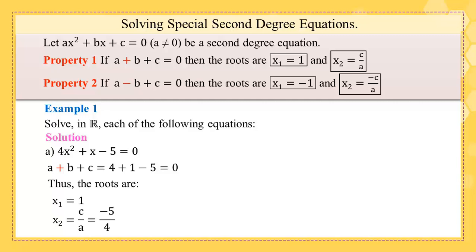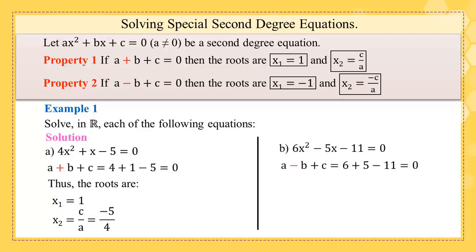Another example, part (b): you notice that a = 6, b = -5, c = -11. So a - b + c = 6 - (-5) + (-11) = 6 + 5 - 11 = 0. So the second property is applied. Thus the roots are x₁ = -1 and x₂ = -c/a.